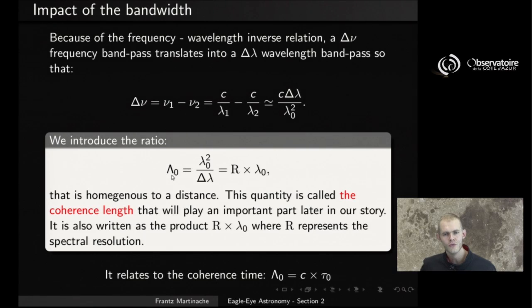So, somehow, there is this new quantity, which I call big lambda_0, that is lambda_0 squared over the bandpass delta_lambda, and that is something that is homogeneous to a distance. This is something we call the coherence length, and that is something that's going to be a very important notion, which we will keep referring to over and over when we look at practical implementations of interferometry. You can also see that you can actually write this coherence length as the product of R and lambda_0, where lambda_0 is the central wavelength of your filter, and R is a quantity that represents the spectral resolution, a dimensionless number, and so a large spectral resolution is going to result in a long coherence length.